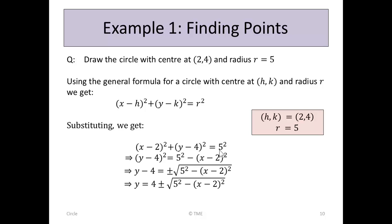That gives us the formula for the circle, but not yet the points on it. We can rearrange: taking x minus 2 squared to the other side gives y minus 4 squared equals 5 squared minus x minus 2 squared. To get an equation in y, we take the square root, so y minus 4 equals plus or minus the square root of 5 squared minus x minus 2 squared. The plus or minus arises because the square root of a positive number can be either positive or negative.